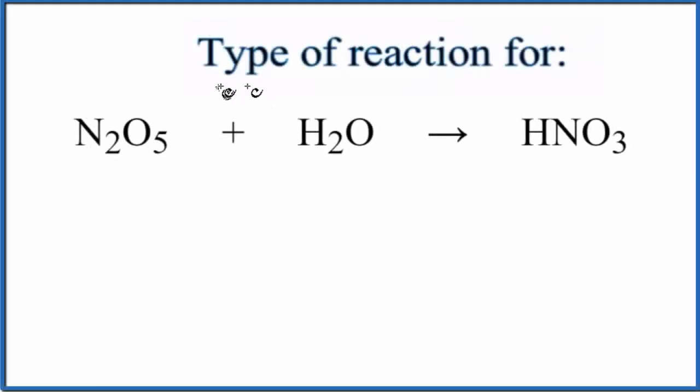In this video we'll take a look at the type of reaction for N2O5 plus H2O yields HNO3. This is dinitrogen pentoxide plus water gives us nitric acid.